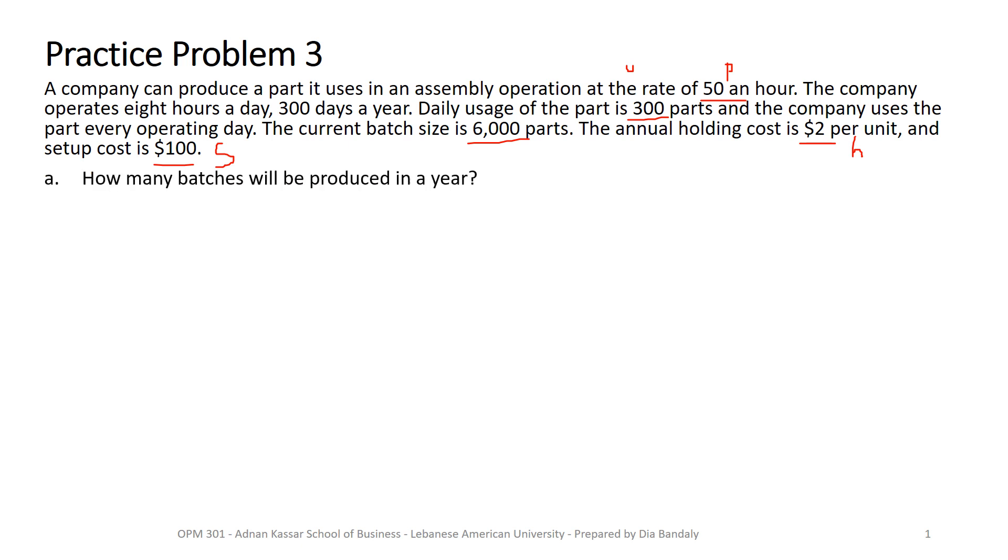So what's the first question? How many batches will be produced in a year? You don't need to remember that, in fact, or this is a very obvious metric, how to find it. But just in case you forgot about it, you have a formula sheet that says total cost is I max over 2 times h plus D over Q times S. So we look here, right?